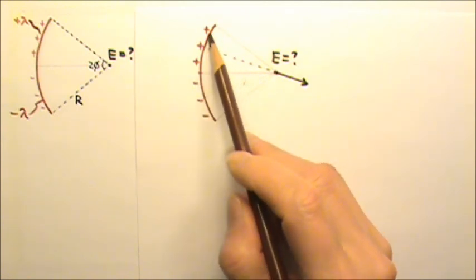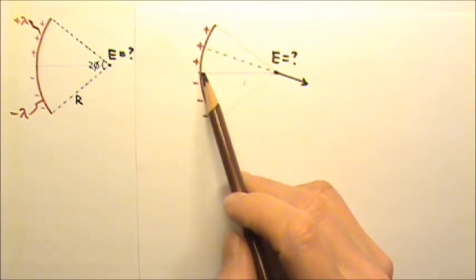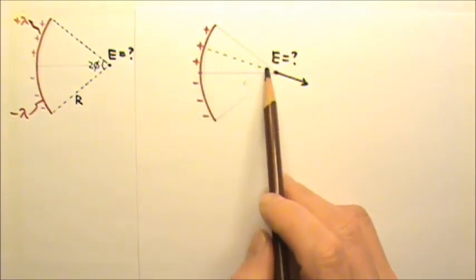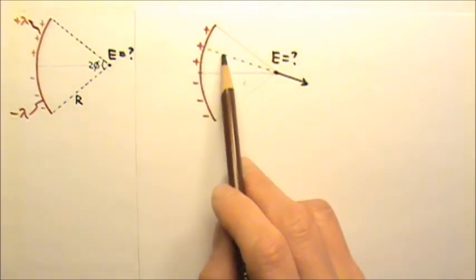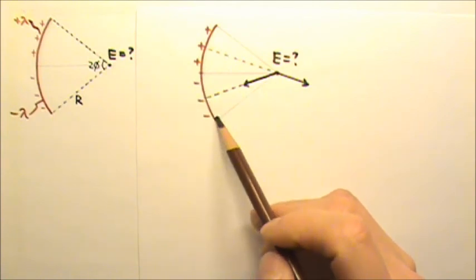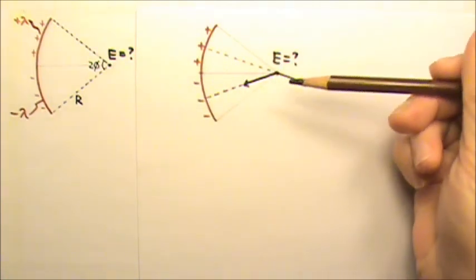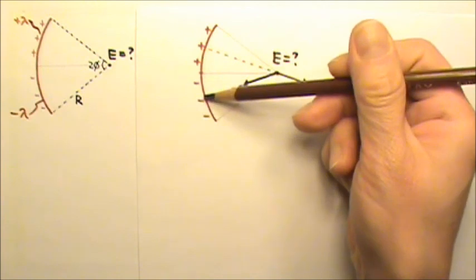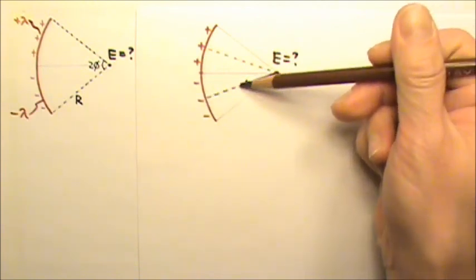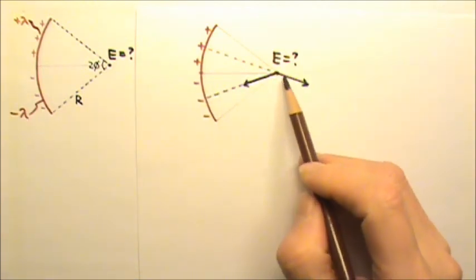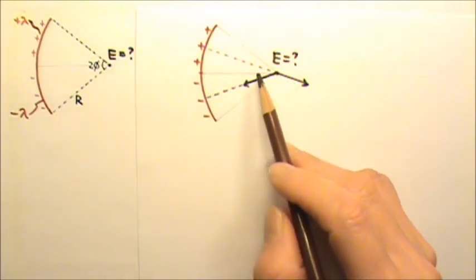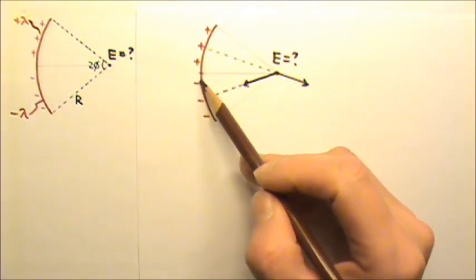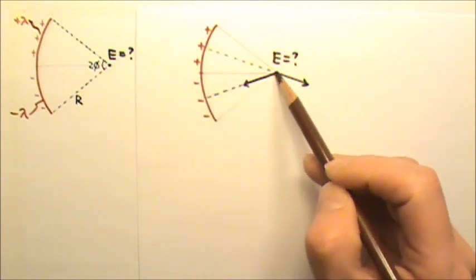By symmetry, the top half of the arc produces an electric field out of the positive charge from the midpoint of the top section. The bottom half produces an electric field into the negative charge and into the midpoint of the bottom section. And these two fields, in terms of magnitude, they are the same because these are same amount of charge equal distance away from this point.